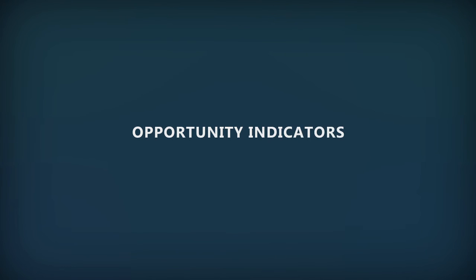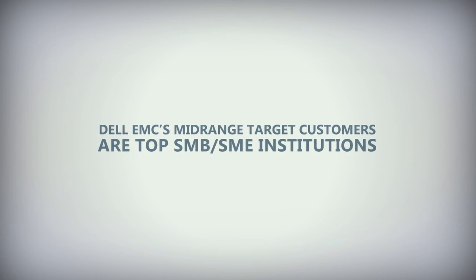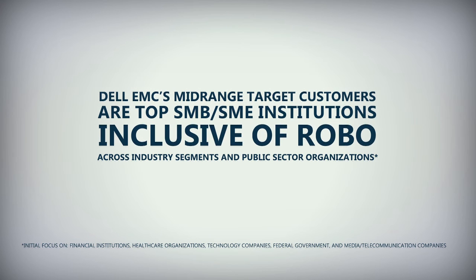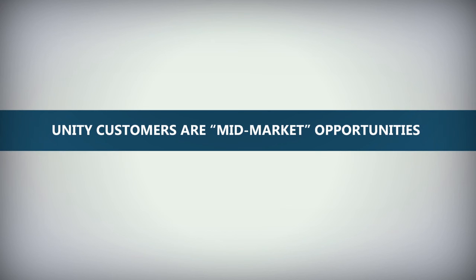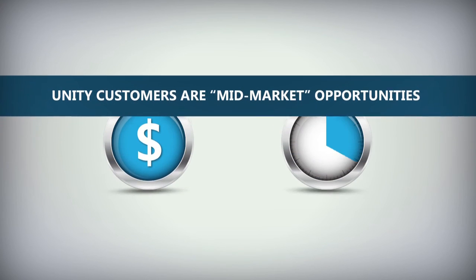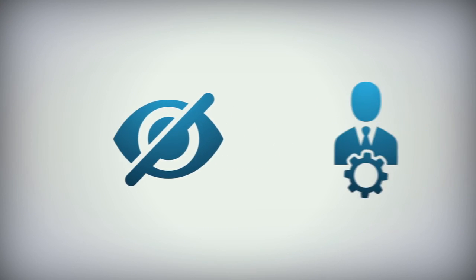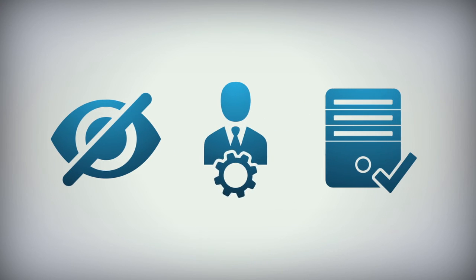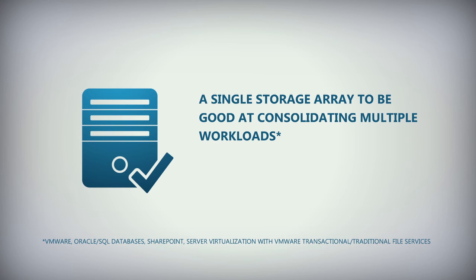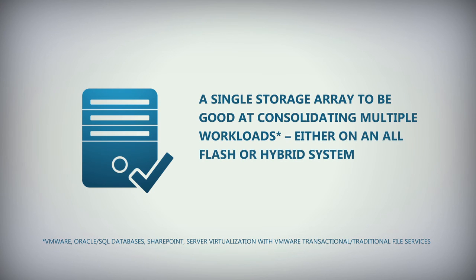Let's look at what account-specific characteristics would indicate a customer or prospect is likely to be receptive to this message. Dell EMC's mid-range target customers, inclusive of Unity, are essentially top SMB/SME institutions, inclusive of ROBO, across industry segments and public sector organizations. These are medium-sized enterprises with real resource and time constraints. They need storage to be invisible in their infrastructure, easy to manage, and just work. They also need a single storage array to be good at consolidating multiple workloads on an all-flash or hybrid system, and serve both capacity and performance needs.